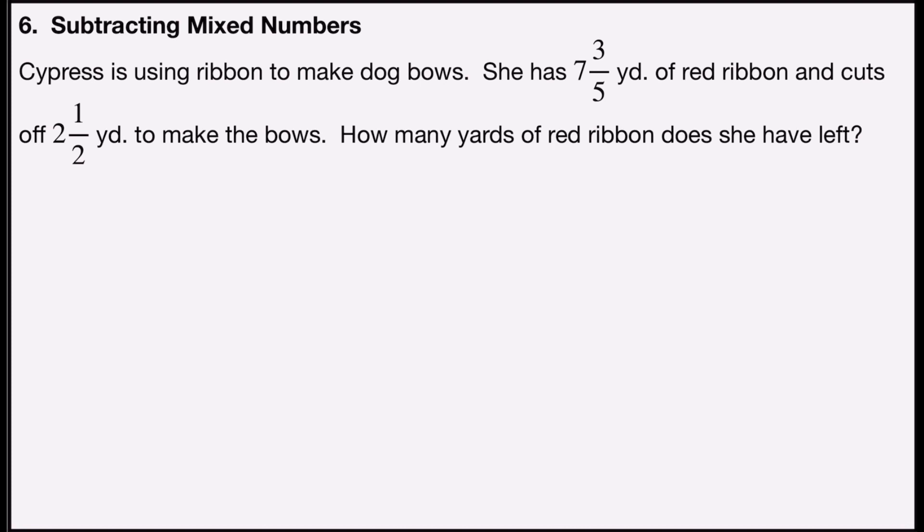Problem number six is subtracting mixed numbers. It says Cypress is using ribbon to make dog bows. She has seven and three-fifths yards of red ribbon and cuts off two and a half yards to make the bows. How many yards of red ribbon does she have left?